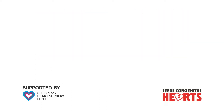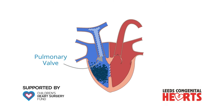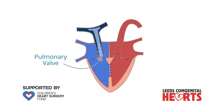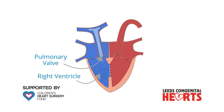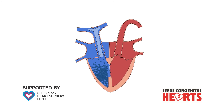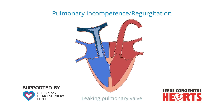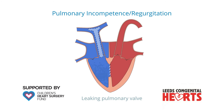A common consequence of surgery to repair Tetralogy of Fallot is that the pulmonary valve leaks. The function of the pulmonary valve is to prevent blood from returning to the right ventricle once it has been pumped into the pulmonary arteries. When the valve leaks, some of the blood being pumped from the right ventricle to the pulmonary artery returns to the right ventricle, and this is called pulmonary incompetence, or pulmonary regurgitation. We explain more about pulmonary incompetence in another movie.